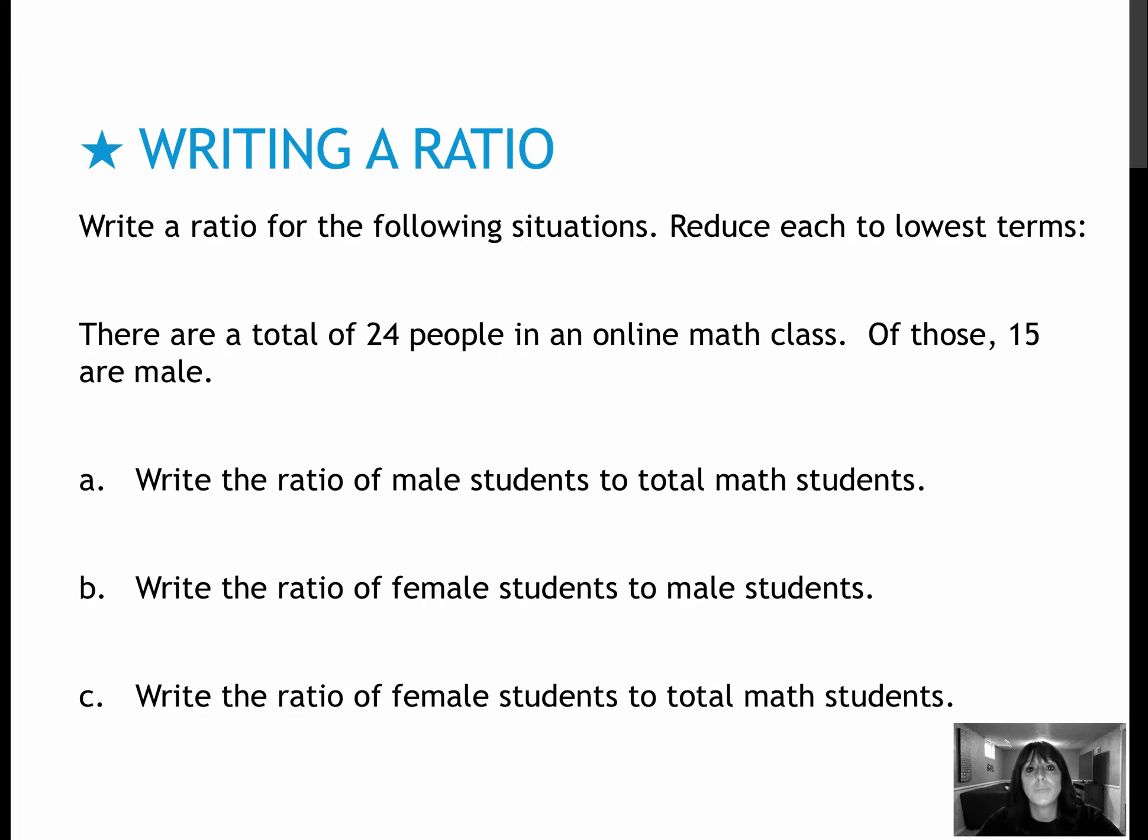Try this one on your own, then press play to see how you did. In this situation, we have 24 people in an online class. 15 of those 24 are male, and our first question asks us to write the ratio of male students to total math students, we're assuming total math students in this class. So 15 male to the total of 24, and of course we will reduce to lowest terms, so I would divide by 3 to get 5 and divide by 3 to get 8. So 5 to 8 would be the ratio of male to total.